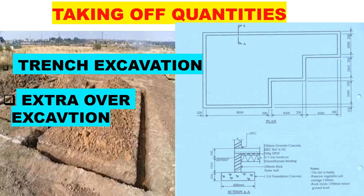This is the plan we have — we are majorly going to dwell on two items. We have the plan, the section, and some notes. We've been told the site is bushy: remove vegetable soil at an average of 150 millimeters, and rock exists 1500 millimeters below ground level. We want to look at those two aspects.